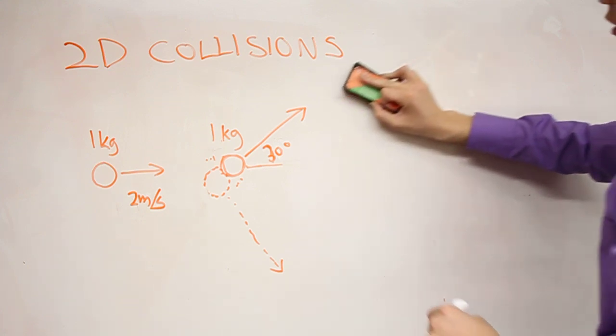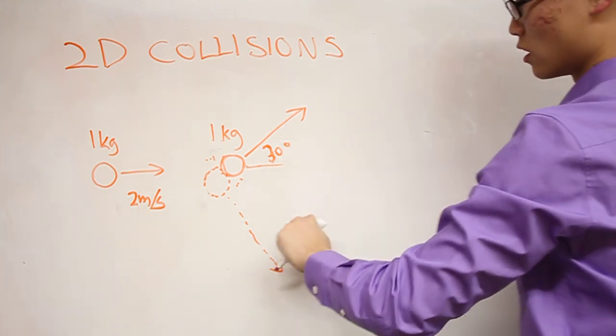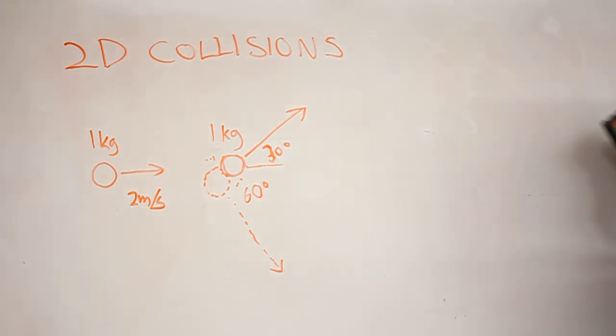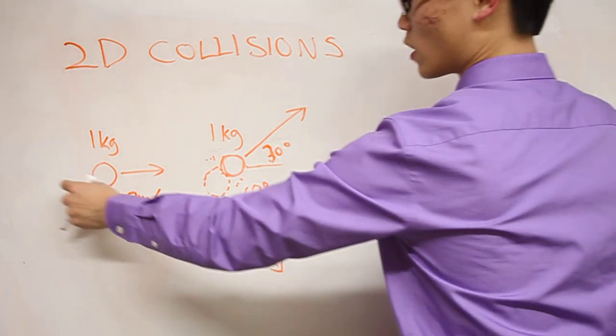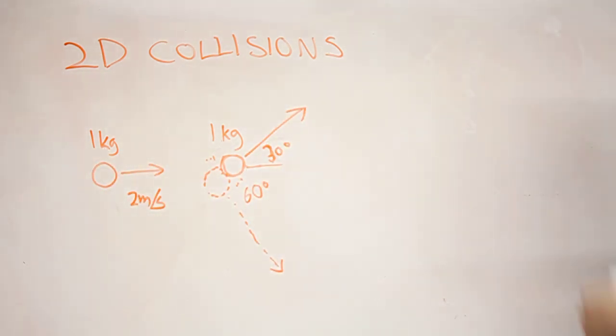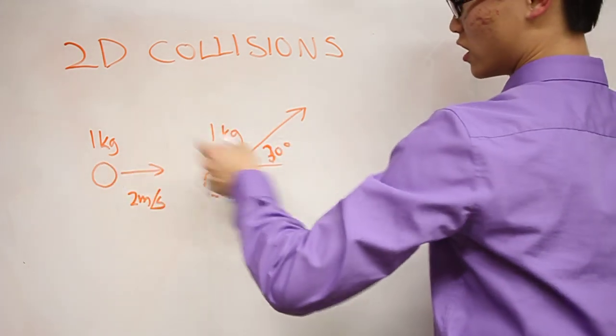So we know that this is a 90 degree angle, so we know that this angle is 60, and then we can start to write our equations. Now you realize that the ball was initially just moving in this direction, and now you're creating movement up and down. That doesn't seem possible because there was no movement up and down in the initial before the collision, and now there is.